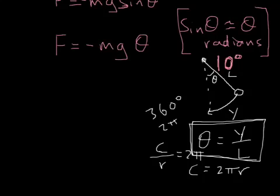But this is the thing we're next going to use. So we can make our equation go to this. F equals negative mg y, which is the displacement over L, the length of the pendulum.